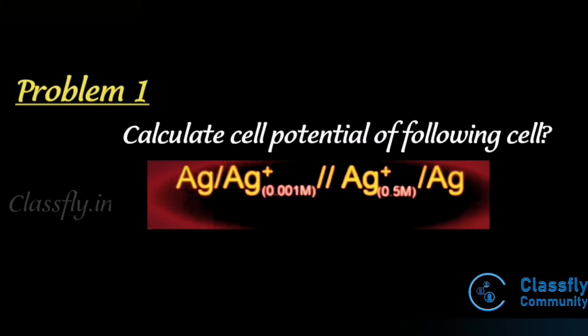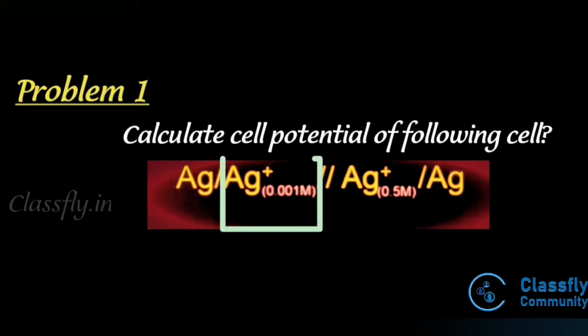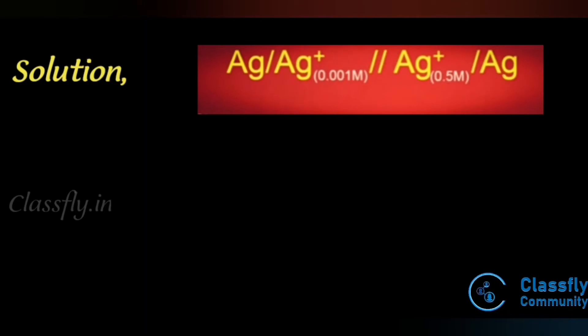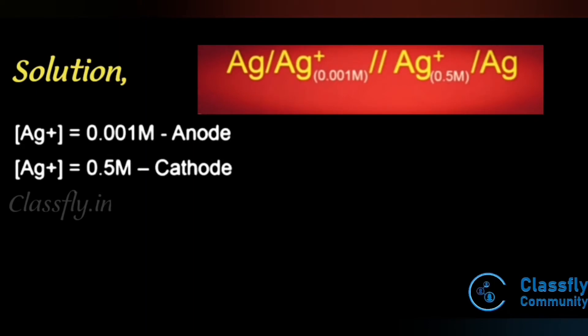From the cell representation, 0.5 M is higher than 0.001 M, so the left side of the salt bridge acts as anode and the right side acts as cathode. Given data: concentration of Ag⁺ at the anode (left) = 0.001 M; concentration of Ag⁺ at the cathode (right) = 0.5 M.